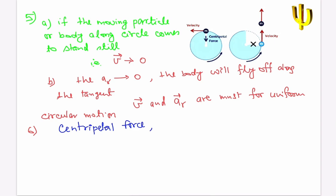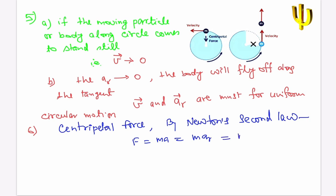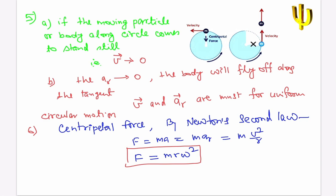To provide centripetal acceleration, we need a force called centripetal force, which by Newton's second law is given by F = ma = m·aᵣ = mv²/r = mrω². It is of constant magnitude but its direction is always changing and always towards the center, maintaining that magnitude.